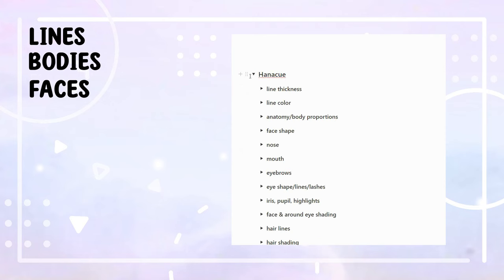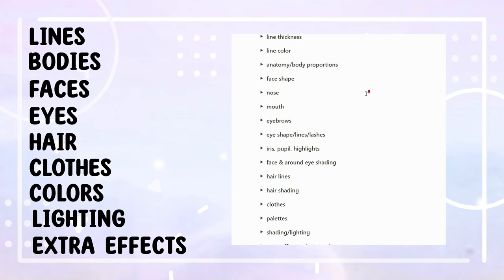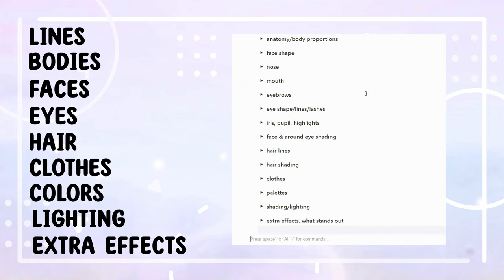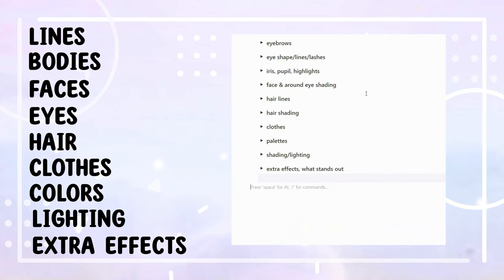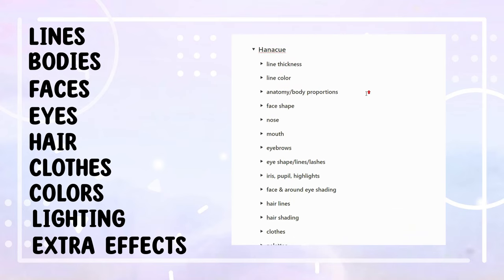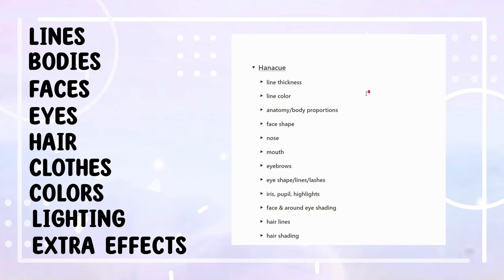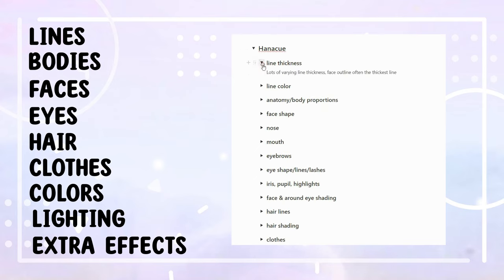The way I went about this is to make notes about how the artist portrayed lines, bodies, faces with a focus on the eye, hair, clothes, colors, lighting as well as extra effects. I watched her YouTube videos and some timelapses to get more insights about the way she draws characters. My notes are focusing on the different features though and not the step-by-step process the artist uses to draw.